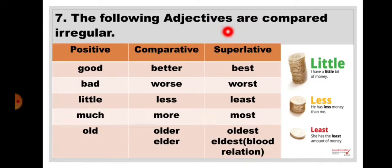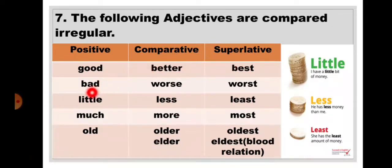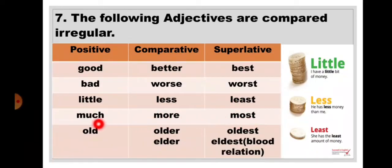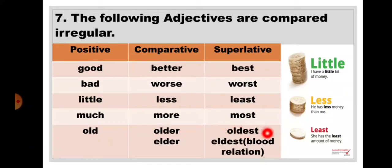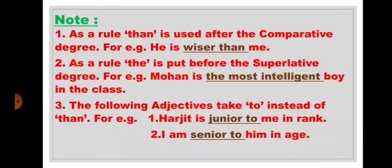Rule 7: The following adjectives are compared irregularly. Good → better → best. Bad → worse → worst. Little → less → least. Much → more → most. Old → older → oldest. Or, if it is related to blood relations: old → elder → eldest.